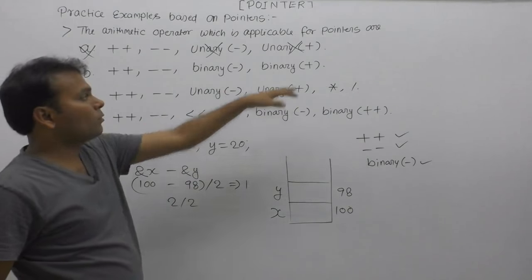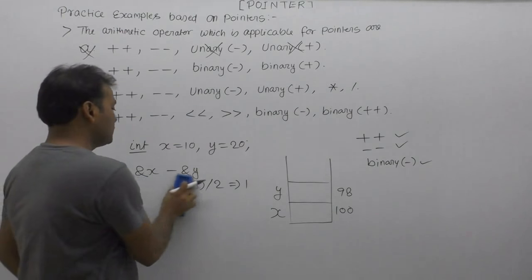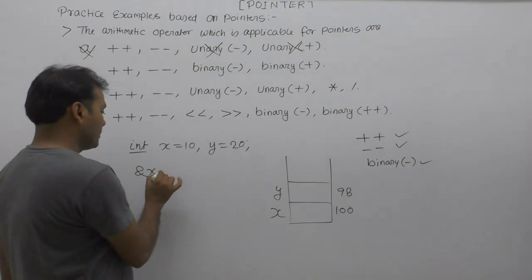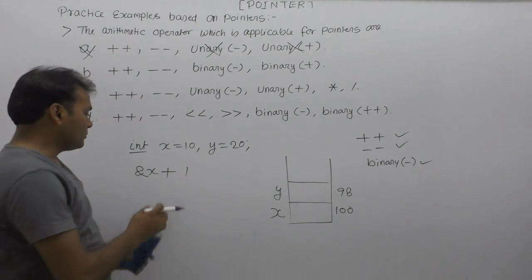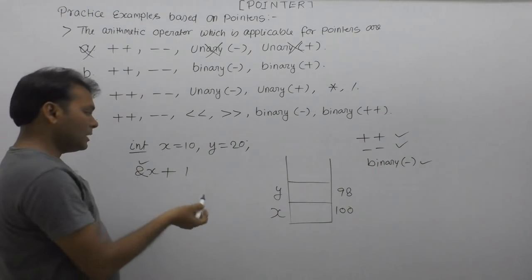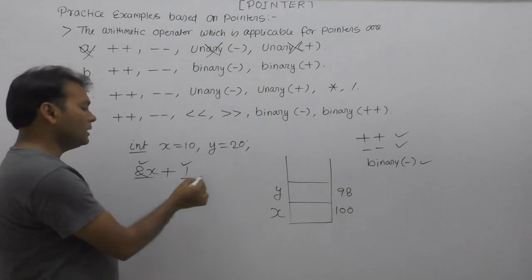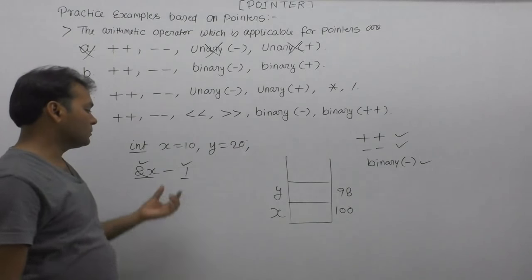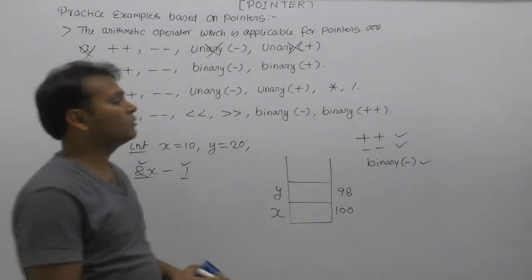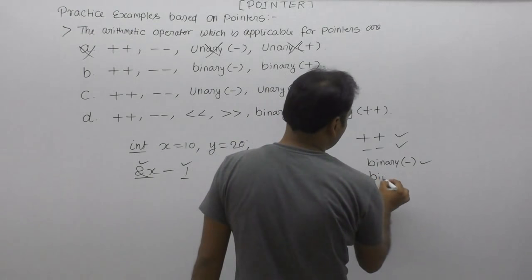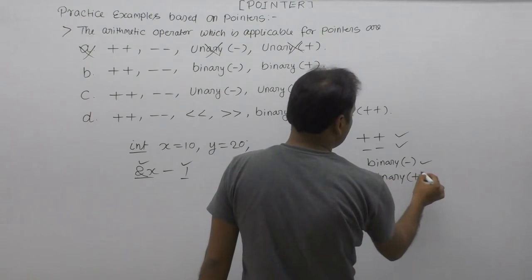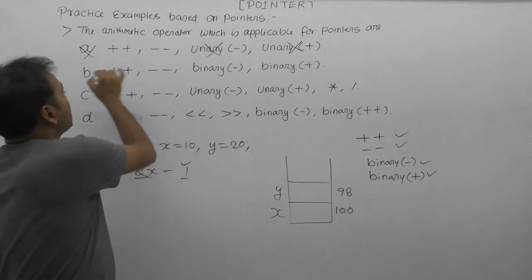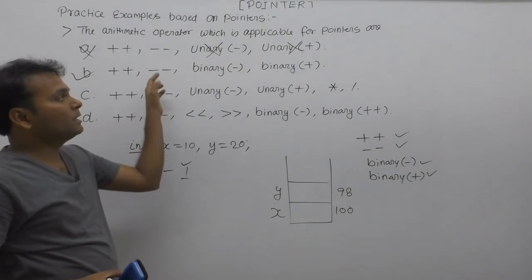Binary plus: pointer plus integer is also a valid operation, same as binary minus. So both binary plus (pointer plus integer) and binary minus are valid operations. Since all four of these cases are valid, the correct option is B.